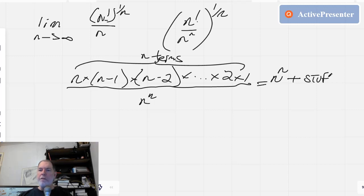which is going to be of lesser degree. In fact, it will be of degree n minus 1, and we're going to put all that over n to the n. Alright, why